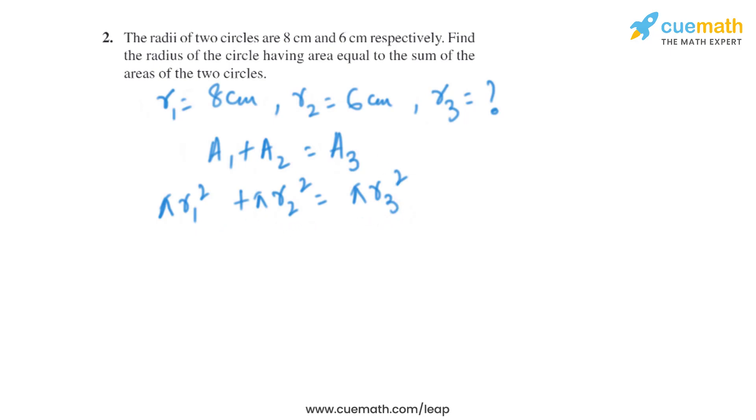That is π r1² plus π r2² divided by π. And π divided by π is basically 1, so it will be r1² plus r2².